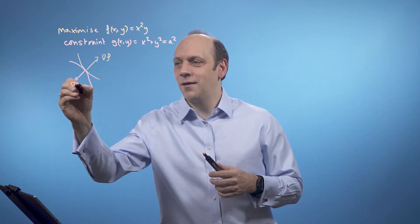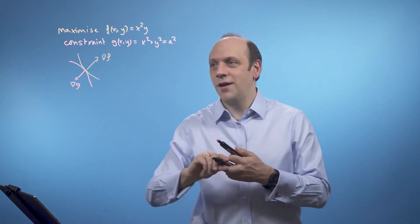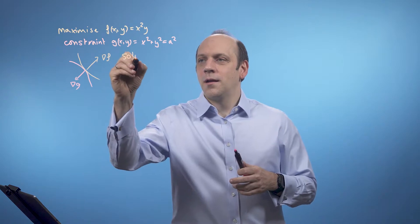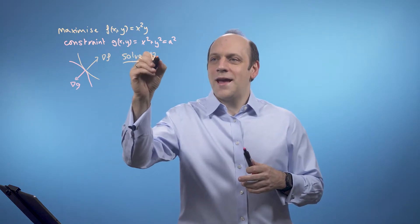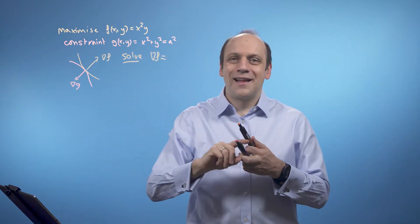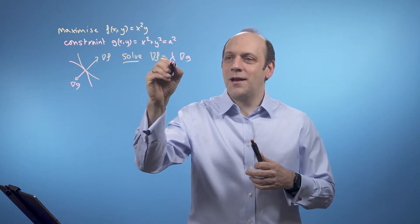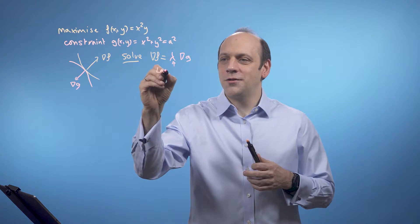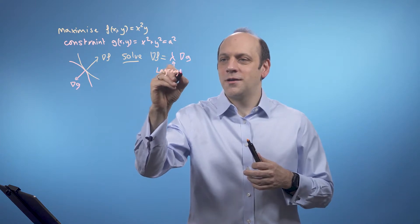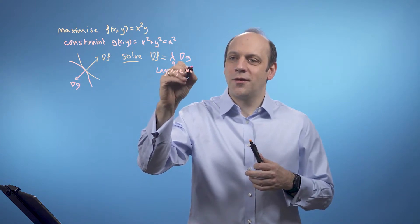What we're doing is we're solving grad f is equal to lambda, some number, times grad g, where lambda is Lagrange's multiplier, or the Lagrange multiplier.